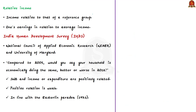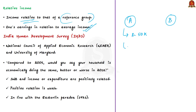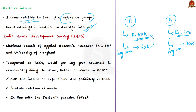Relative income is an income which is relative to that of a reference group — it refers to one's earning in relation to the average income of that group. For example, if A makes 50,000 rupees but the average salary of A's peers is 60,000, while B makes 40,000 but peers average 30,000 — then A's relative income is lower than B's despite A earning more in absolute terms.